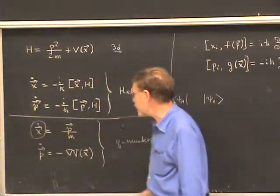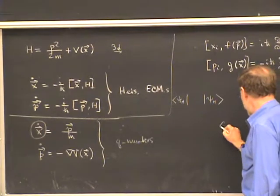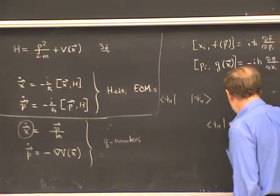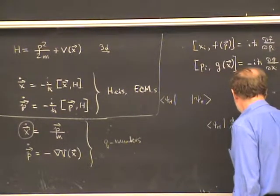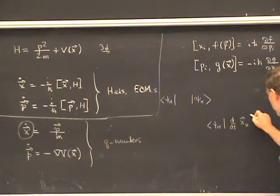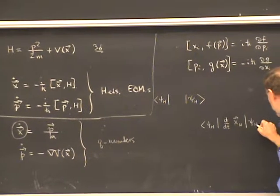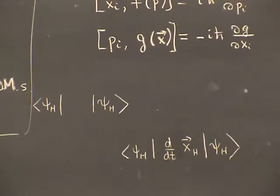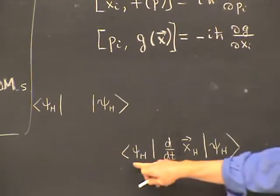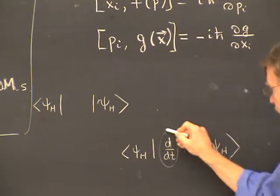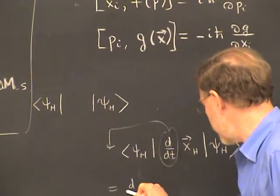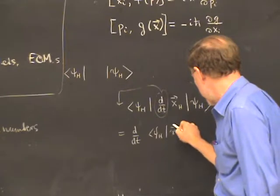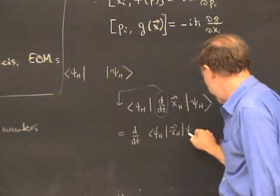Starting with x-dot from the Heisenberg equations, we have psi_H on the left, d/dt of x_H in the middle. The Heisenberg bras and kets are independent of time, so the d/dt can be taken outside. This becomes d/dt of the expectation value of x in the Heisenberg picture.